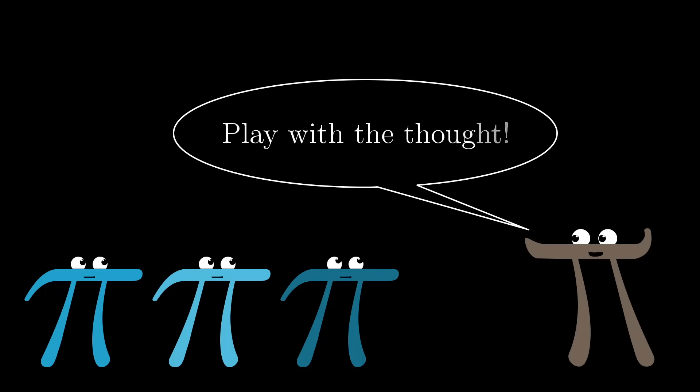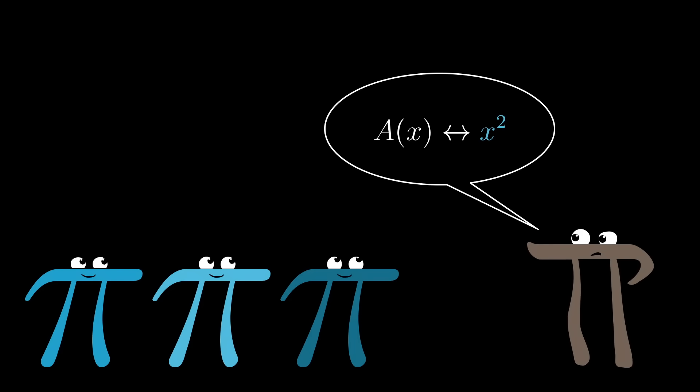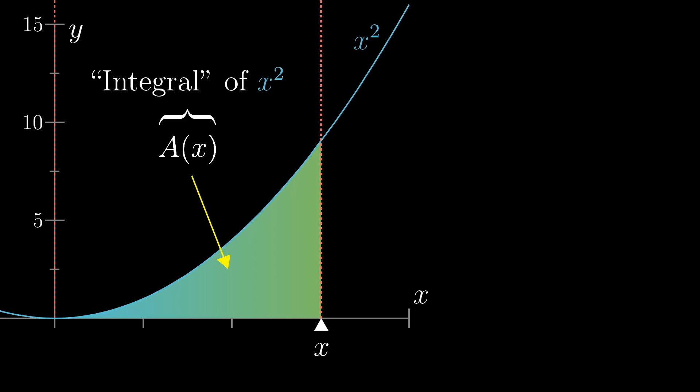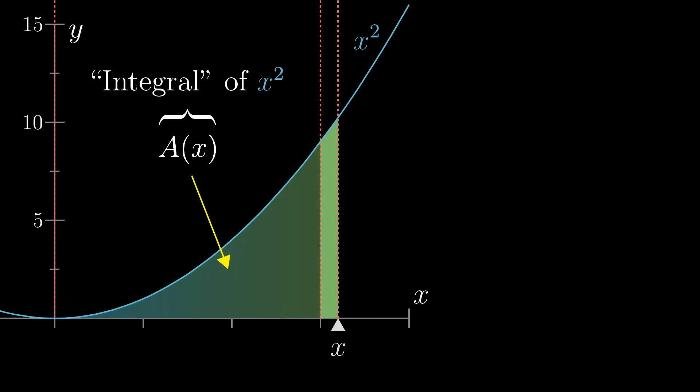Instead, play around with the idea with no particular goal in mind. Spend some time building up familiarity with the interplay between the function defining the graph, in this case x squared, and the function giving the area. In that playful spirit, if you're lucky, here's something you might notice. When you slightly increase x by some tiny nudge, dx, look at the resulting change in area, represented with this sliver that I'm going to call dA, for a tiny difference in area.